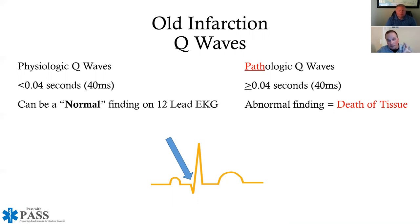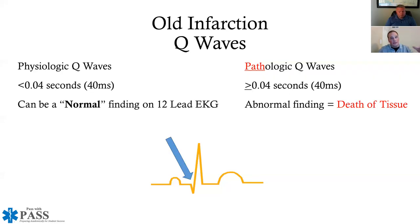The machine is good at measuring and can detect wide pathological Q waves even when they're not visually obvious on the strip. Getting that 'age undetermined' message doesn't mean the patient is having a heart attack right now — it means the machine has picked up on pathological Q waves suggesting a prior MI in that area.